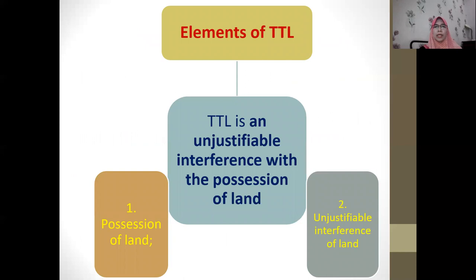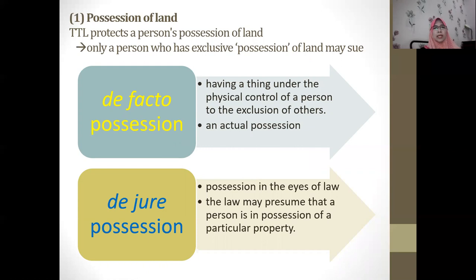The elements of TTL are: first, the plaintiff must prove possession of land; and second, there must be unjustifiable interference with that land. Combining these two elements gives us the definition of TTL: trespass to land is an unjustifiable interference with the possession of land. We will now discuss each element in turn, starting with possession of land.